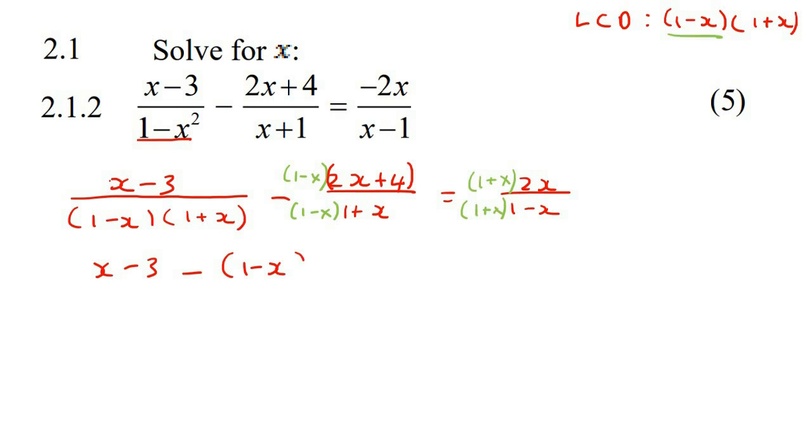Now, in mathematics, when you have an equal sign, when your denominators are all the same, you can ignore them. So now we can just say x-3 minus (1-x)(2x+4) equals (1+x)(-2x), which we don't need to put in a bracket. But I'm going to put that -2x in the front.